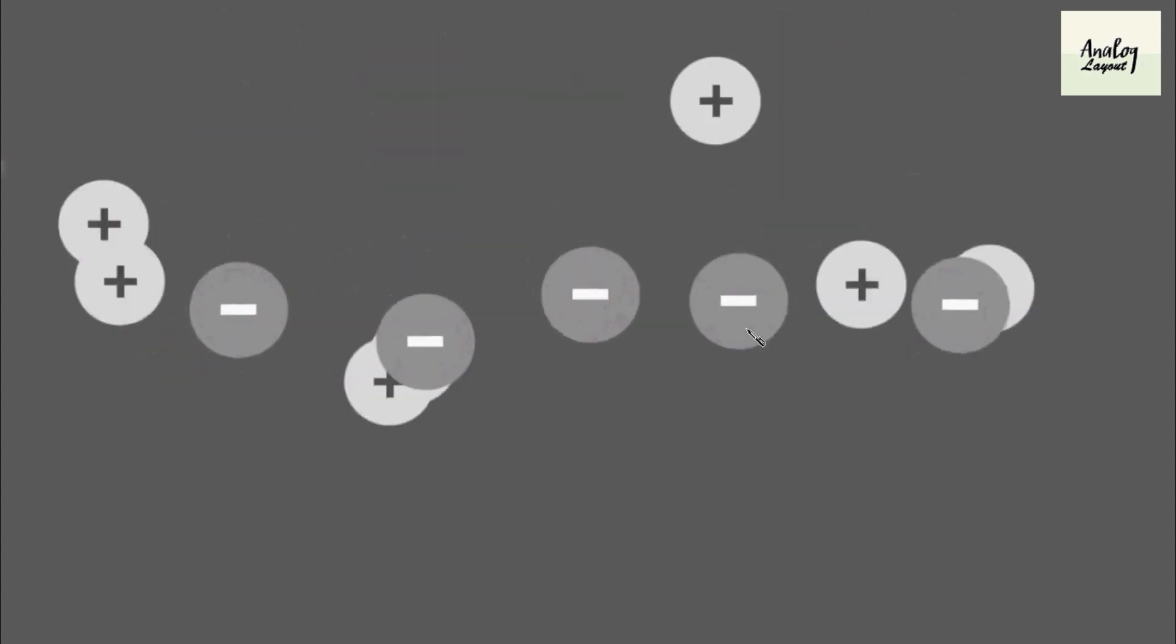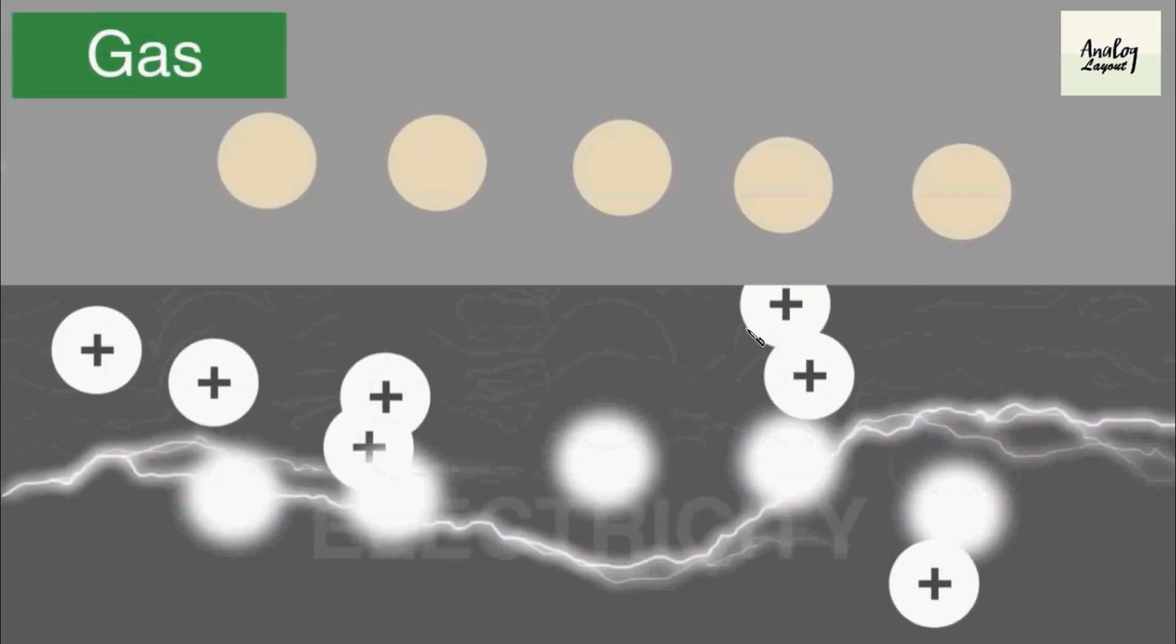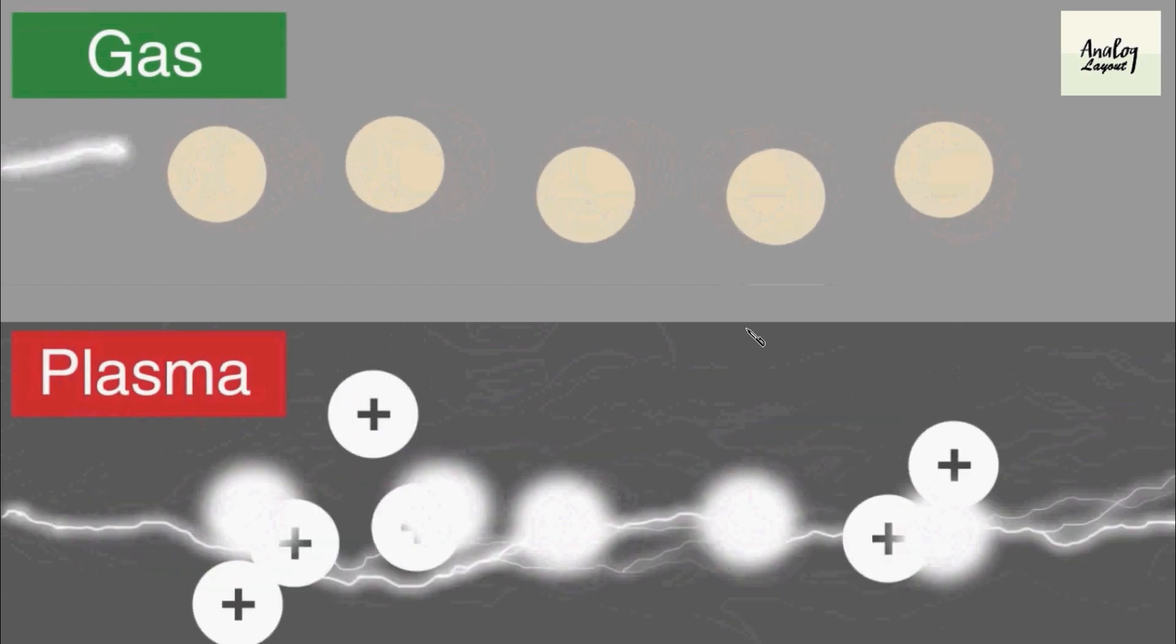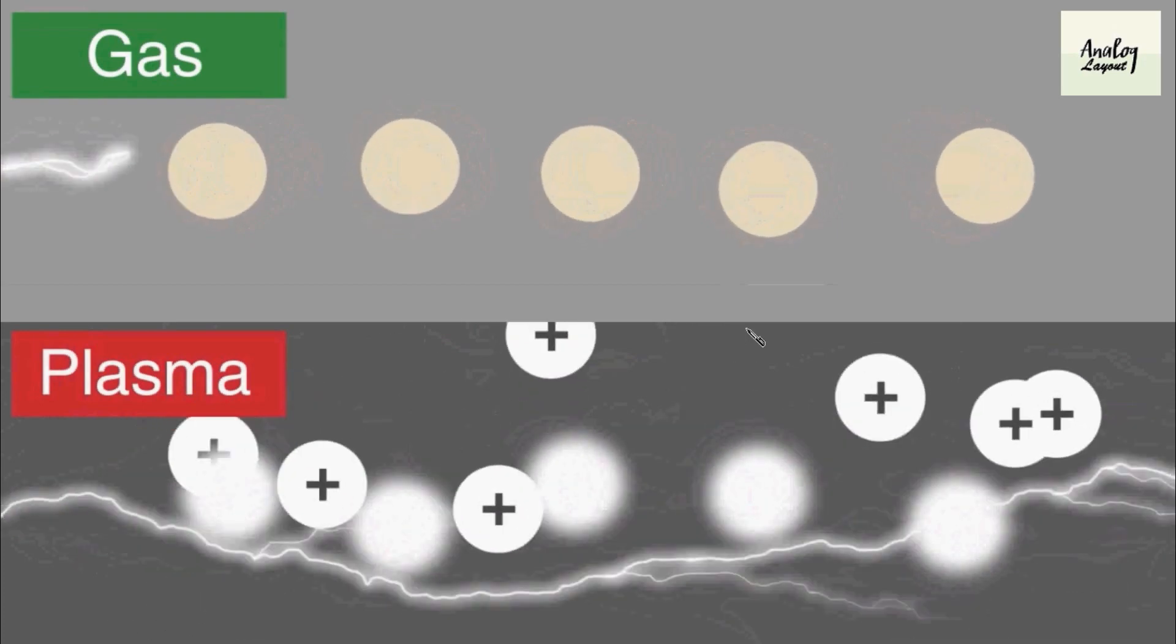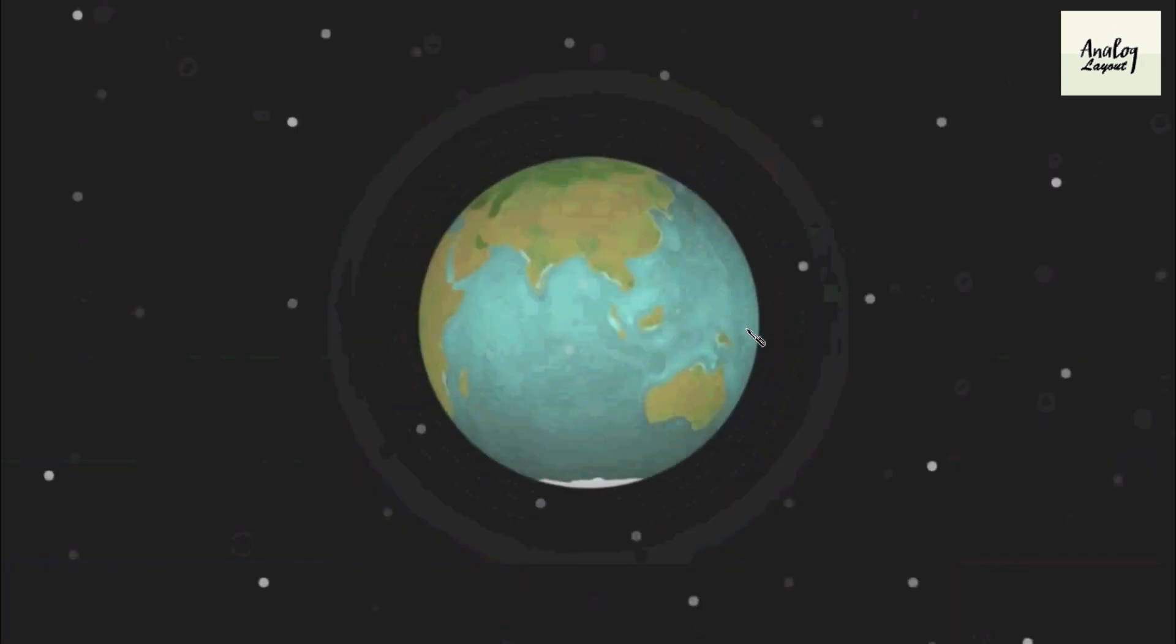It contains equal number of positive electrons and negative electrons. Since the positive electrons are present in the plasma, the plasma can conduct, but other gases will not conduct. Because of this free electron state, whenever there are lightnings it can conduct electricity in the form of plasma.